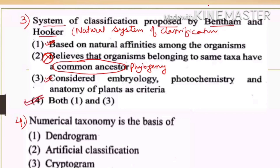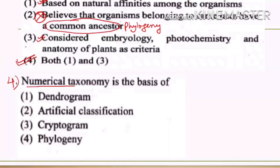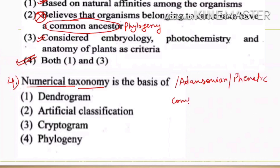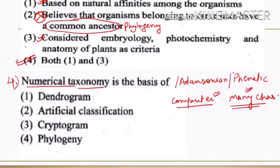Numerical taxonomy is also known as Adansonian taxonomy or the phonetic system of classification. It makes use of computers to analyze data, considering many characters at a time. The tree prepared through numerical taxonomy is known as a dendrogram. When classification is done by phylogeny, the tree prepared is known as a cladogram.